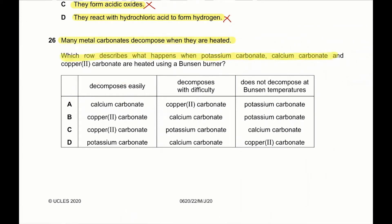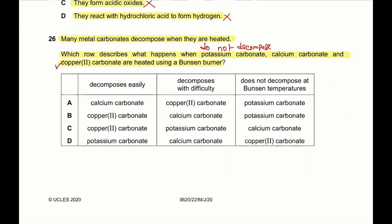Question 26: which row describes what happens when potassium carbonate, calcium carbonate, and copper(II) carbonate are heated using a Bunsen burner? Potassium carbonate will not decompose — Group 1 metal carbonates like sodium and potassium carbonate do not decompose. Calcium carbonate will decompose but at a pretty high temperature. Copper(II) carbonate will decompose most easily, even using a Bunsen burner. So: does not decompose = potassium carbonate; decomposes with difficulty = calcium carbonate; decomposes most easily = copper(II) carbonate. B is the correct answer.